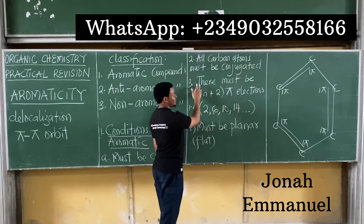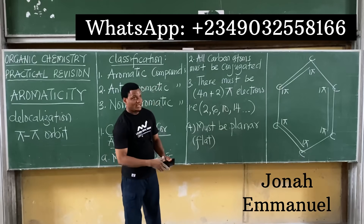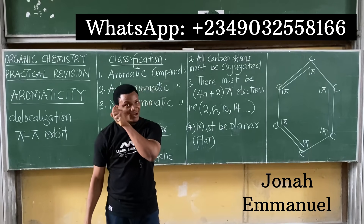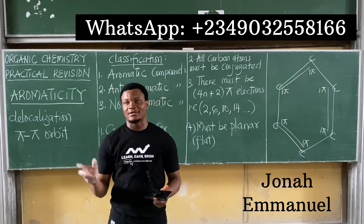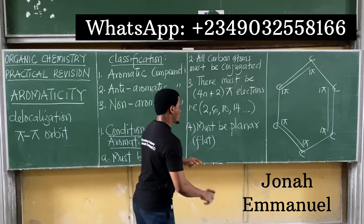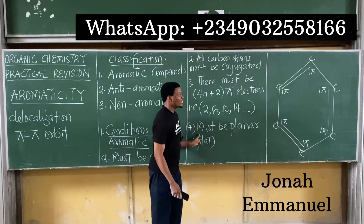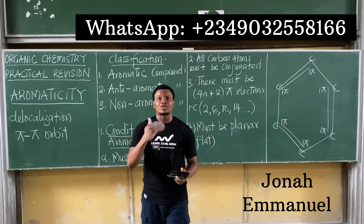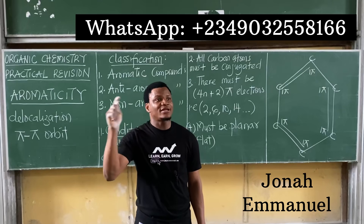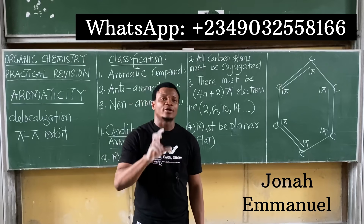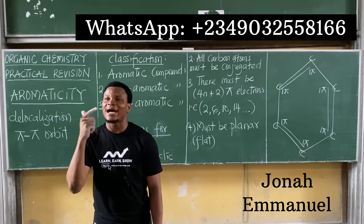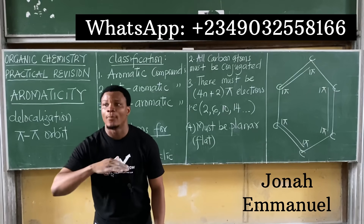Condition four says it must be planar. Here's a helpful hint: all molecules with seven carbon atoms or less are automatically planar. So take note — when you have a molecule with seven or fewer carbons, it's automatically planar.